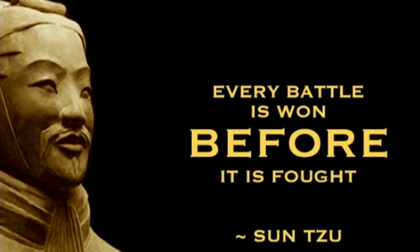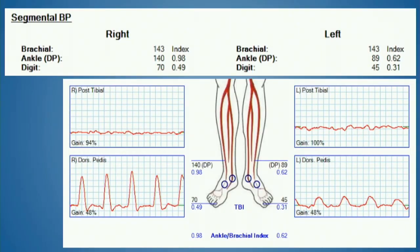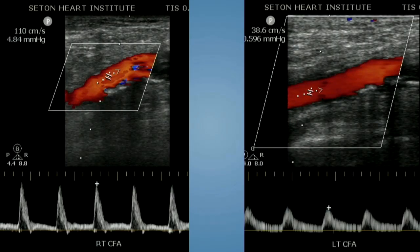With regards to noninvasive imaging — every battle is won before it's fought, so never be surprised by an iliac. We start with our ABI demonstrating on the left side a significantly depressed ABI of 0.62 and dulled Doppler waveforms. By duplex in our lab, even if we're looking at a single limb, we always do the ipsilateral CFA — to compare waveforms and to know about our access site, ensuring we're not micropuncturing over lesions. We clearly see asymmetry and a dulled monophasic spectral Doppler in the left CFA.